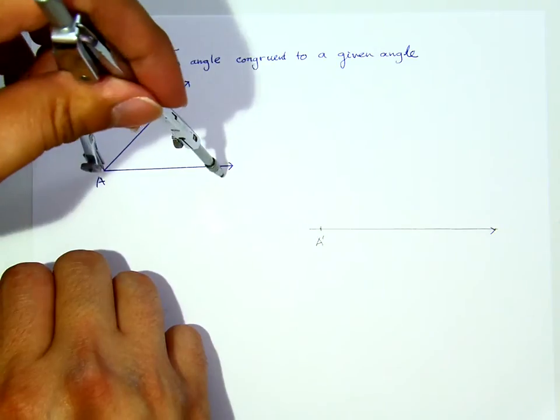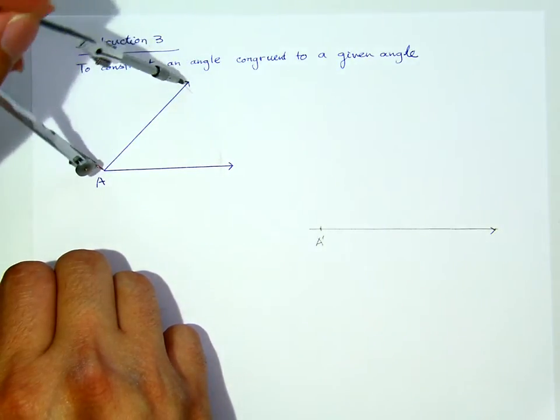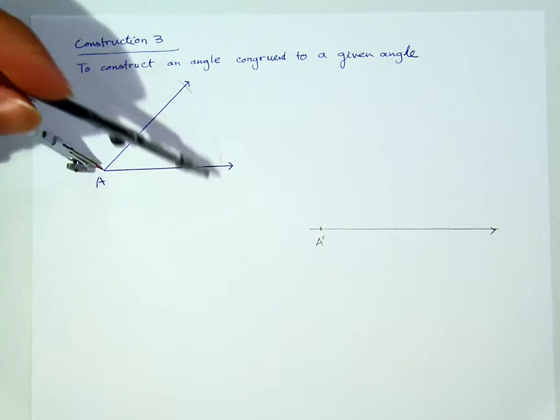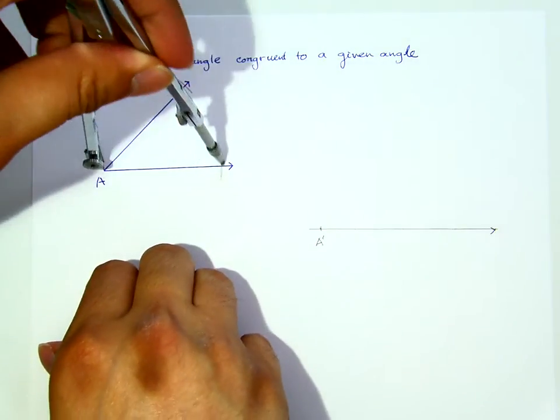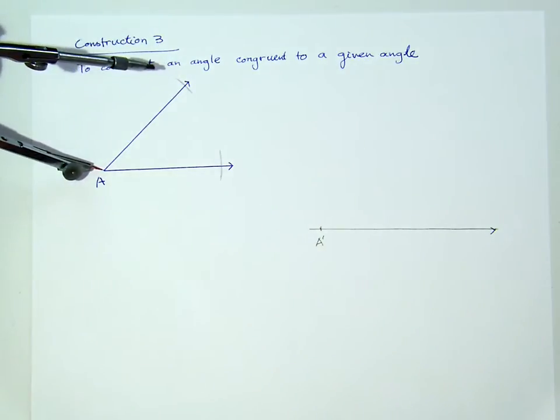I will swipe through these two legs here, the legs of the angle. Let me make it more visible. Now that's why the pencil of your compass needs to be sharp.